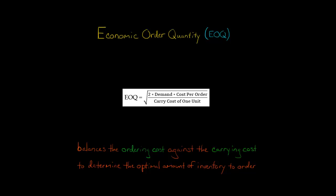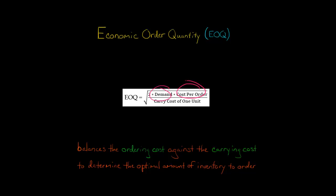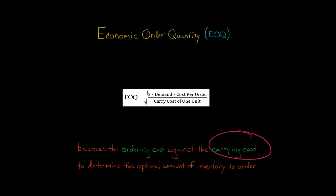In this video, I'm going to show you an example of how to calculate the economic order quantity, sometimes abbreviated as EOQ. Here's our formula: we take two times the demand — for an annual period, that's the annual demand — times the cost per order, divided by the carrying cost of one unit for the same time period. With this formula, we're balancing the ordering cost against the cost of holding the inventory, those carrying costs.